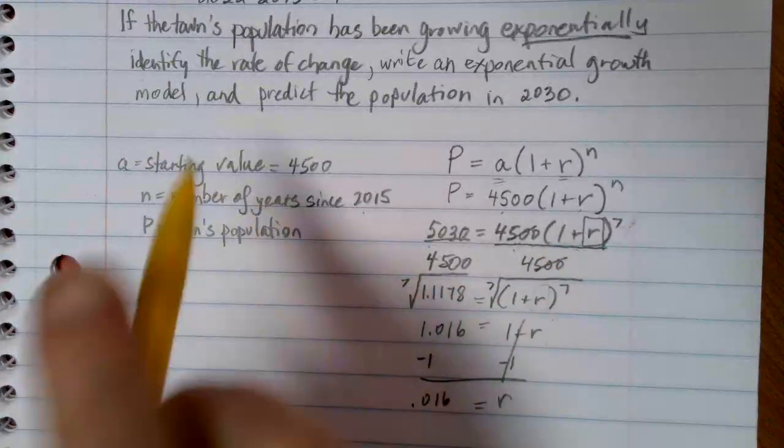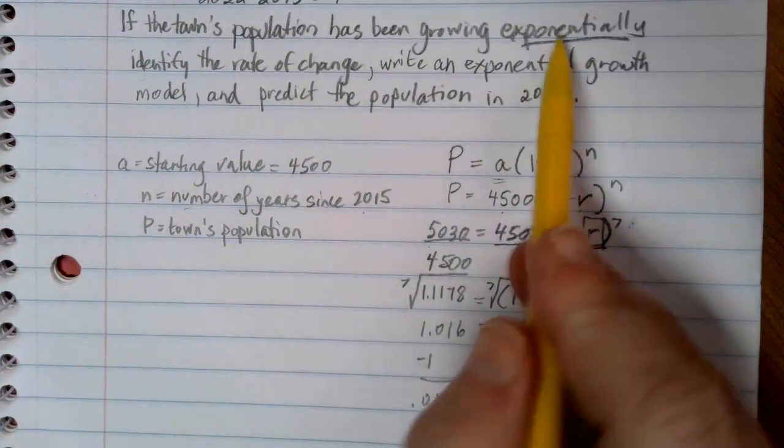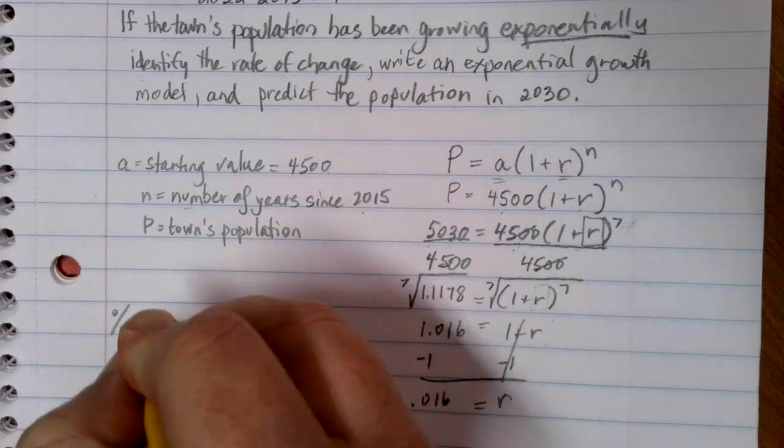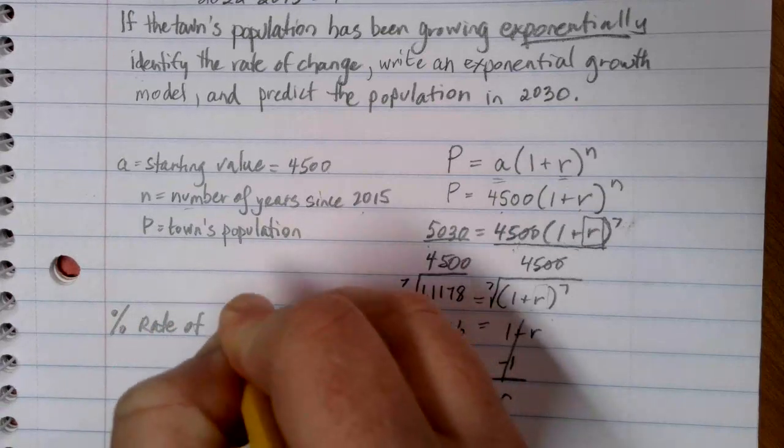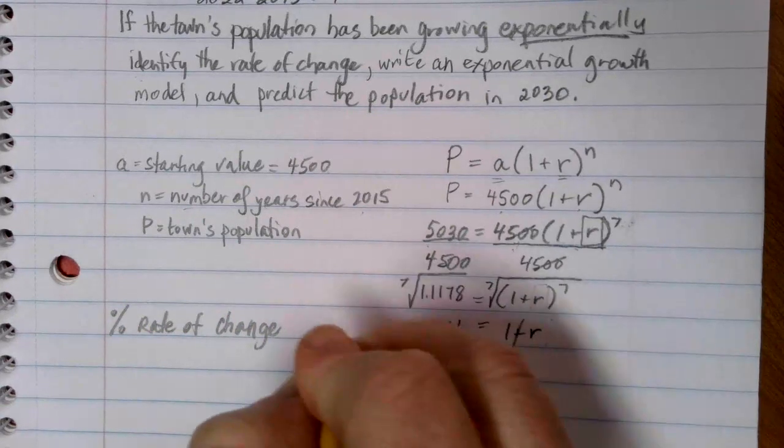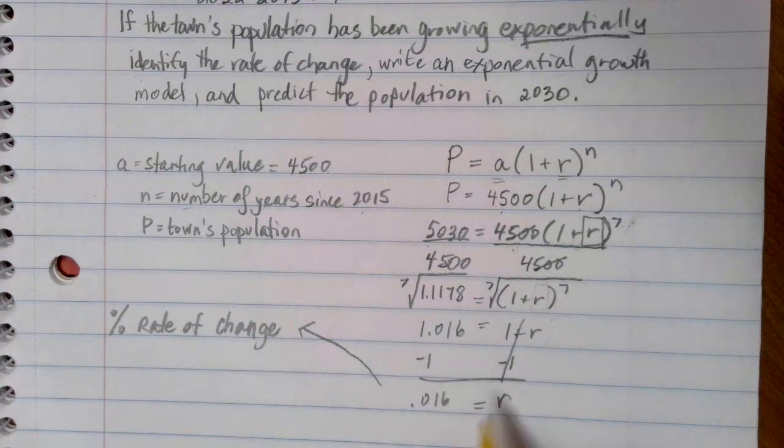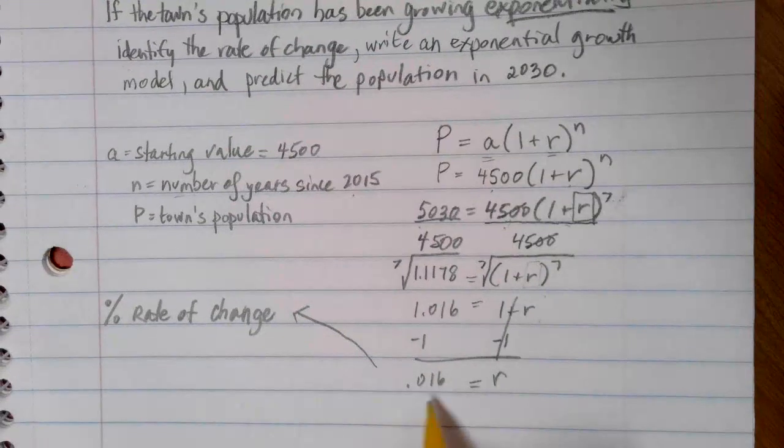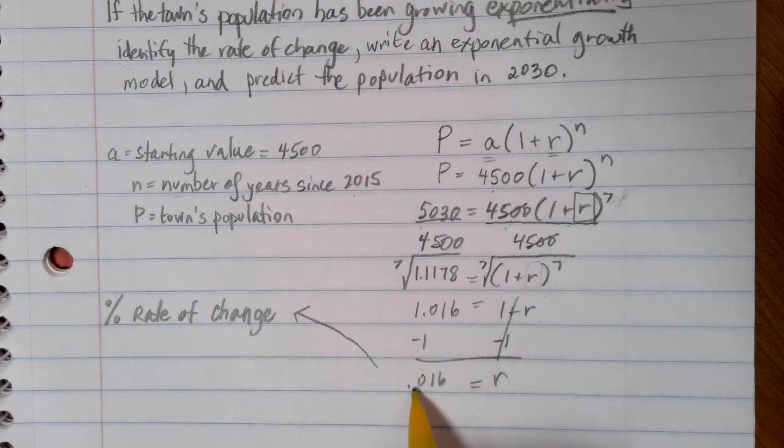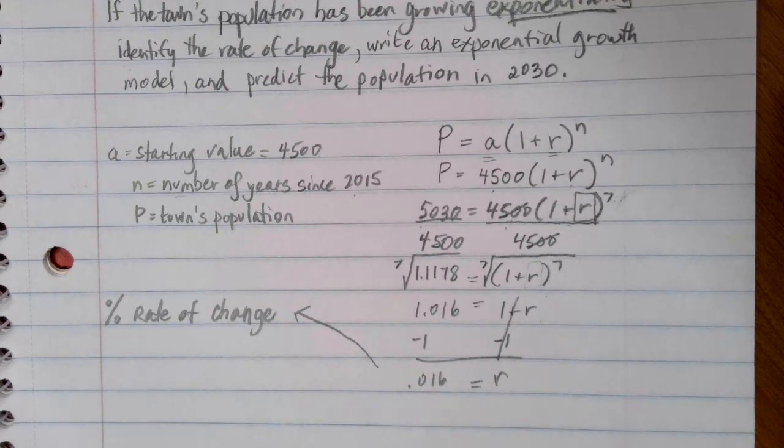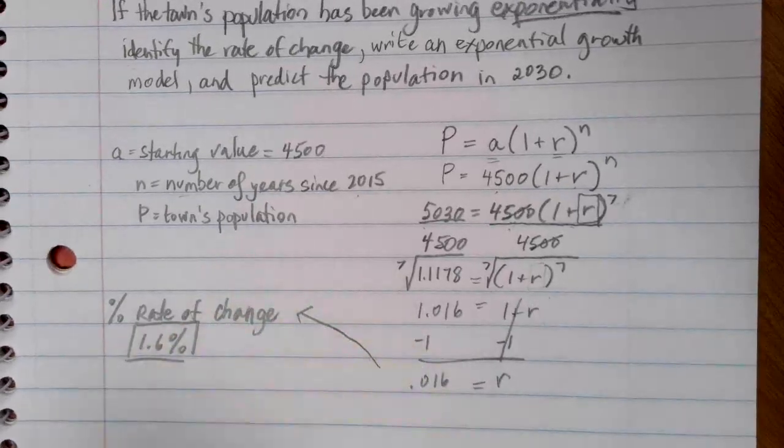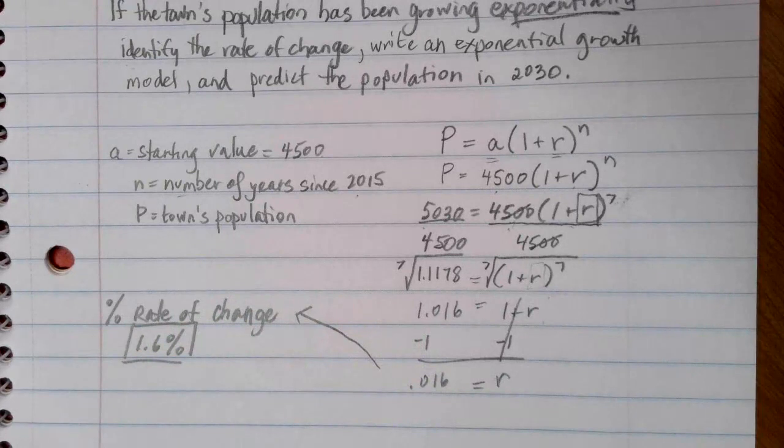The first question, if we were growing exponentially, we wanted to identify the rate of change. The rate of change comes from that R. However, if you want to talk about the rate of change of an exponential equation, we usually want to write it in its percentage form. To take a decimal and write it in percentage form, I'm going to move the decimal 2 to the right or times by 100, and that's going to give me 1.6%.